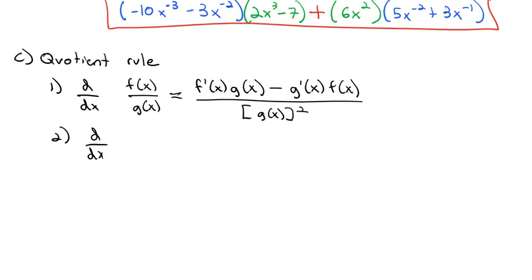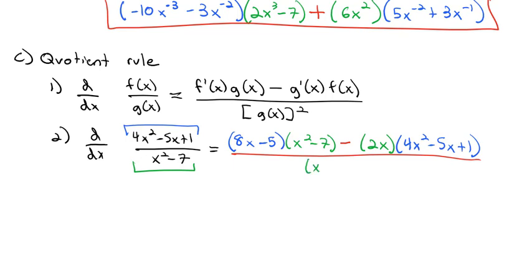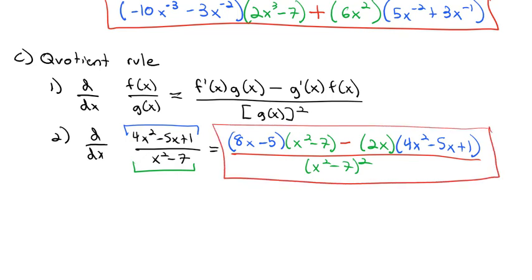For example, finding the derivative of 4x squared minus 5x plus 1, over x squared minus 7. We've got a top piece and a bottom piece. We take the derivative of the first piece: 4 times 2 is 8x minus 5, times the denominator just as it is, x squared minus 7. Then we subtract the derivative of the denominator: x squared becomes 2x, times the numerator, 4x squared minus 5x plus 1. In the denominator, we take the old denominator, x squared minus 7, and square it to get our final — ugly but correct — derivative.